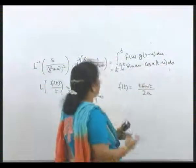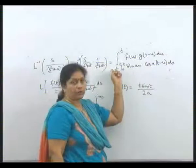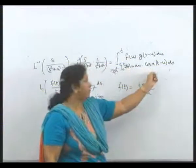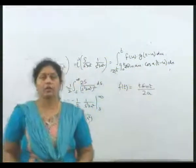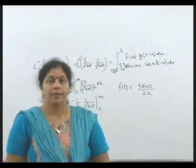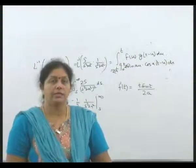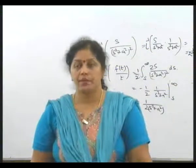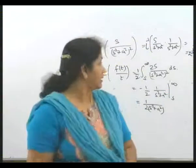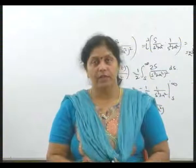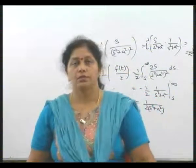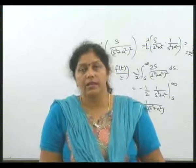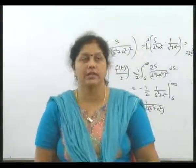We multiply and divide by 2 to use the identity 2 sin(A) cos(B) equals sin(A+B) plus sin(A-B). Applying this, sin(au) and cos(a(t-u)) give sin(au + at - au) plus sin(au - at + au), which simplifies to sin(at) plus sin(2au - at).